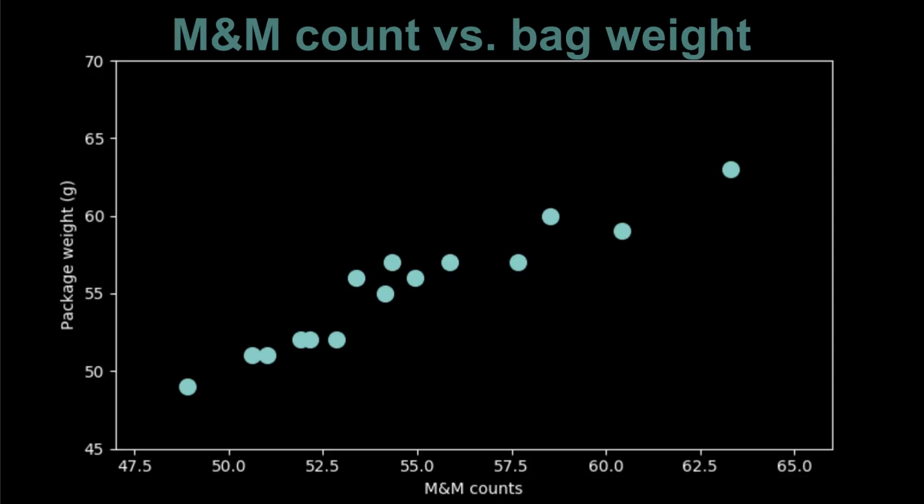For this data, x is the M&M count and y is the bag weight. The slope and the intercept are now our two parameters, our two dials that we get to adjust to improve the fit of our model.